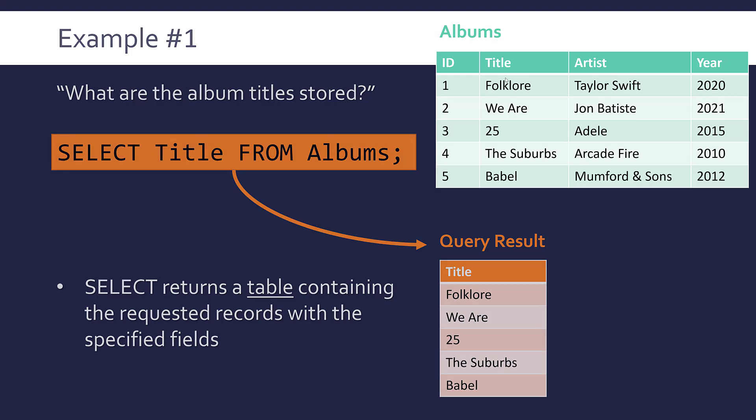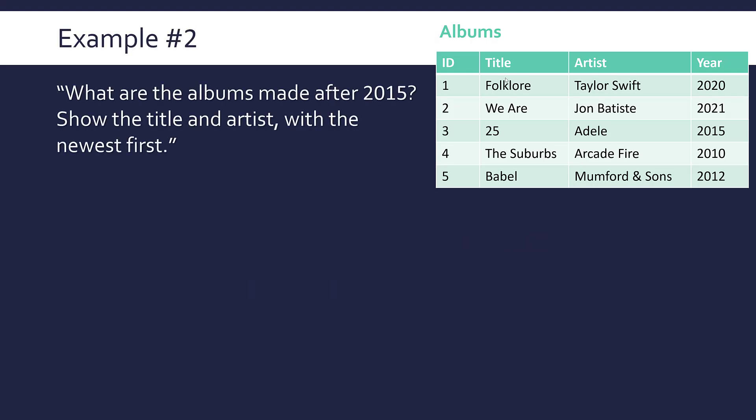That's a simple one. Let's look at a second example which is a little bit more developed. Now let's ask: what are the albums made after 2015? Show the title and artist with the newest first. So a few things here in terms of the fields we need. We need this time not just title. We want title and artist. So it's going to be select title comma artist. We want albums made after 2015, so we need to have a condition and we want to have the newest first, which means we need to have an order by clause.